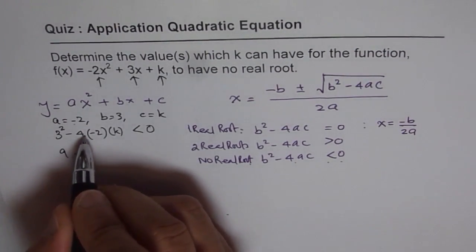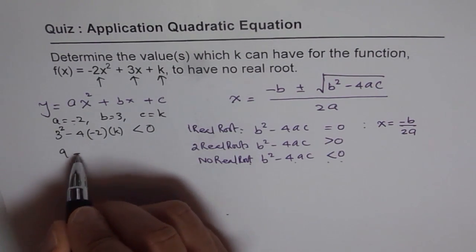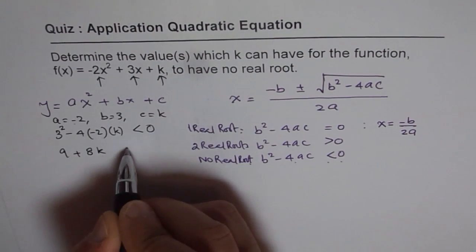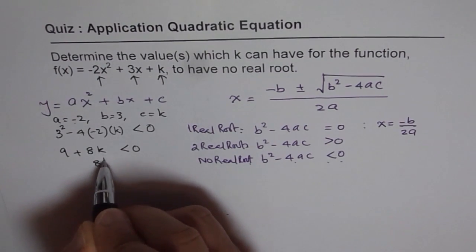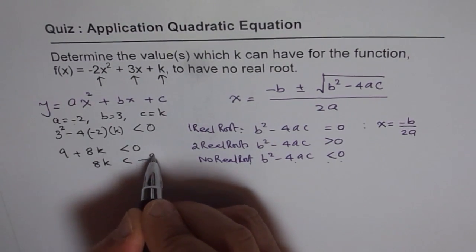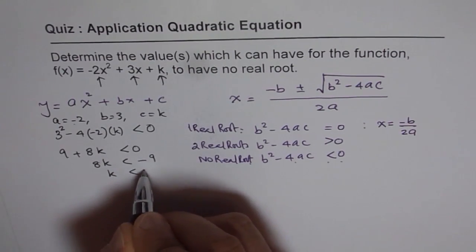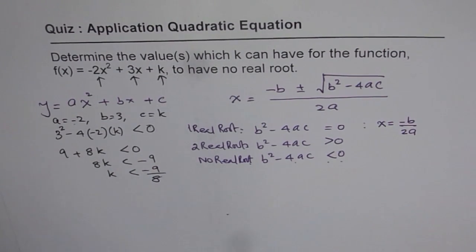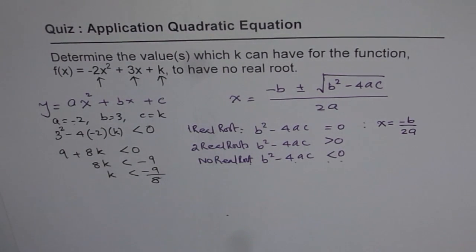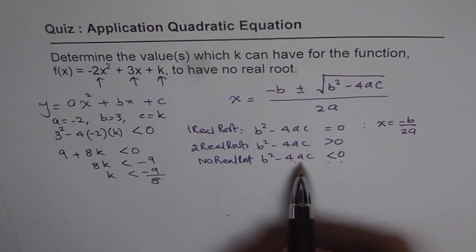That is 9 minus 4 times -2, so plus 8k should be less than 0, or 8k should be less than -9, or k should be less than -9/8. That is our answer. If k is less than -9/8, then we have no real roots.